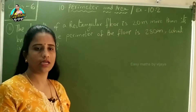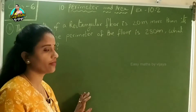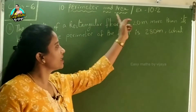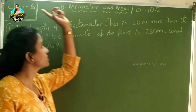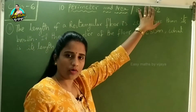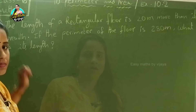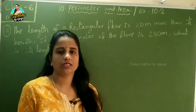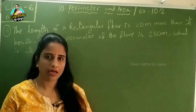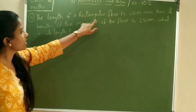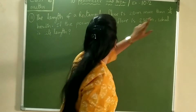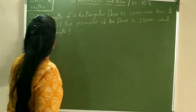Hello everyone, welcome to our channel Easy Maths by Vijaya. Today our topic is perimeter and area, exercise 10.2, class 6. In exercise 10.2, question number 11 — before we start, please like, share, subscribe and press the bell icon. Thank you.